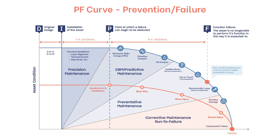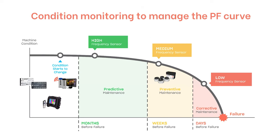We're going to start to the left of the PF curve when ultrasonics are available and move down that chart. Once we get down into functional failure — basically when the machine fails and stops — we're too late. So when we talk about the different technologies of wired, wireless, and portable systems, we need to pay attention to the PF curve, where we want to detect degradation, and how long we have until we need to plan for an action.